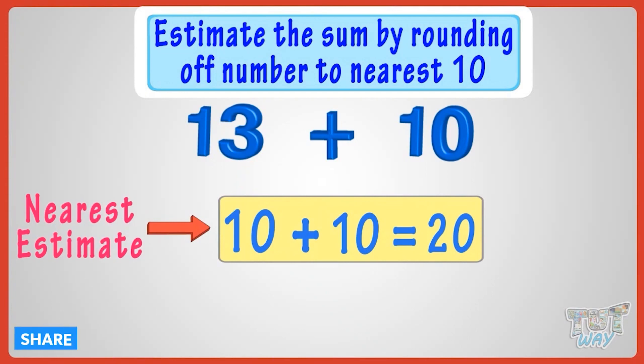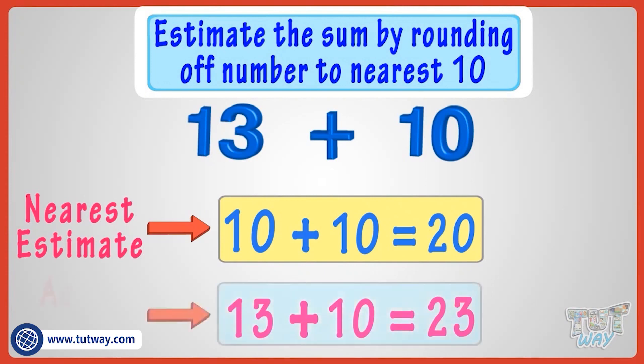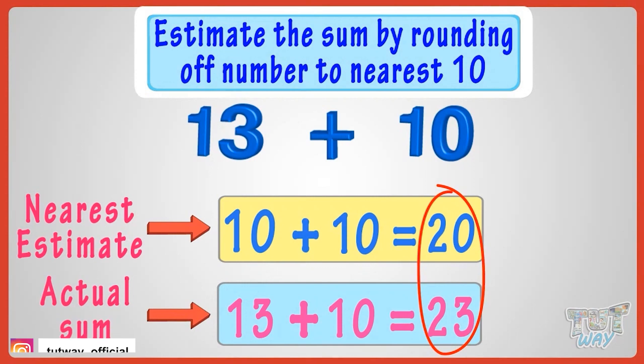Now, compare the estimate with the actual sum. The actual sum is thirteen plus ten equals twenty-three. Yeah! Our estimate is very near. Good!